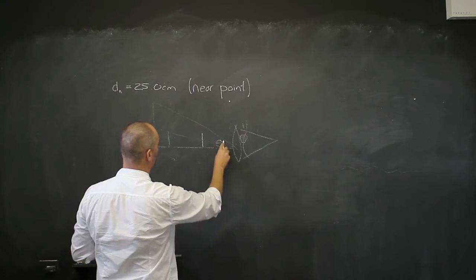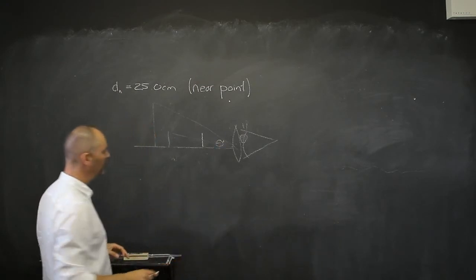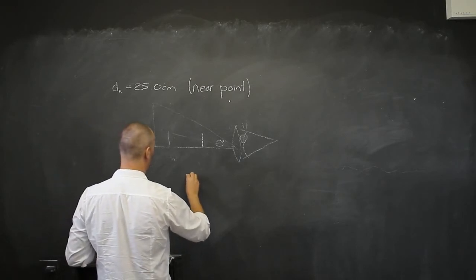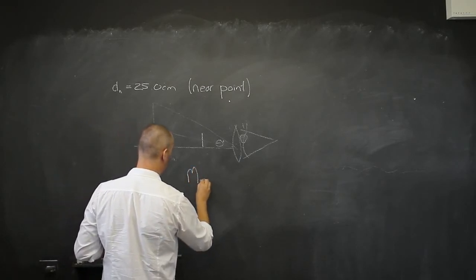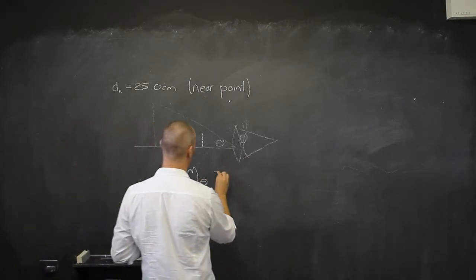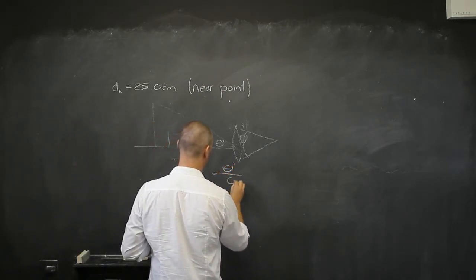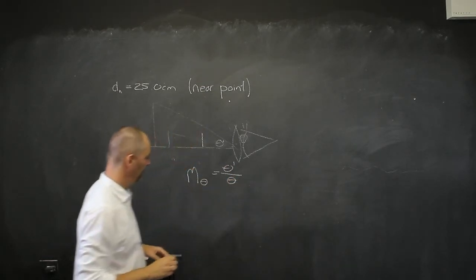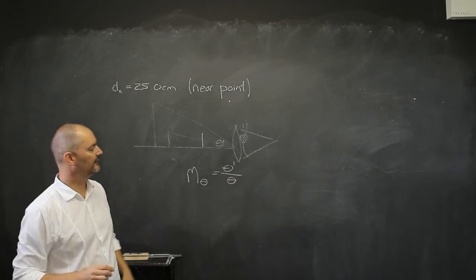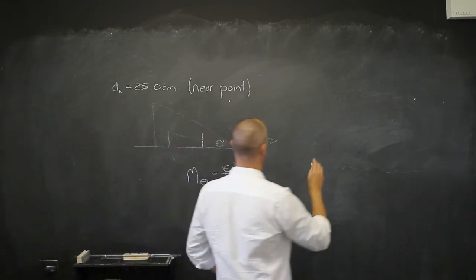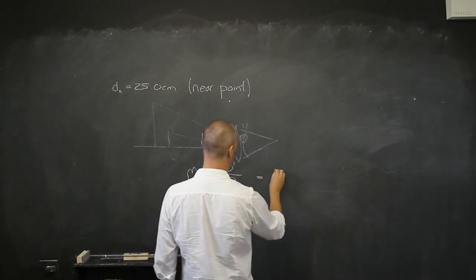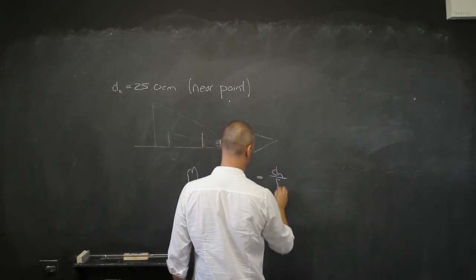And this angle we call theta prime. And that gives us the magnification, angular magnification of this lens. And that is going to be this theta prime divided by theta. That is the angular magnification. And there is a derivation that says the magnification is also going to be DN divided by F.